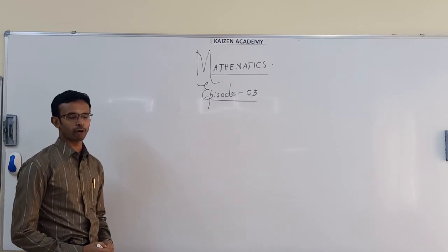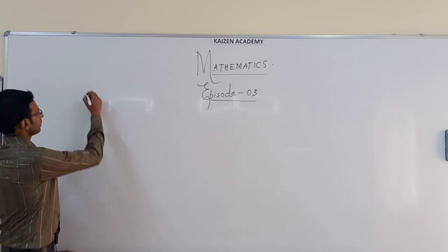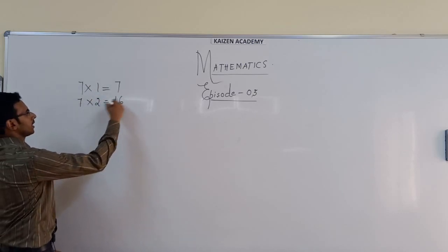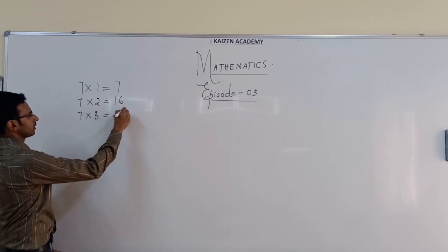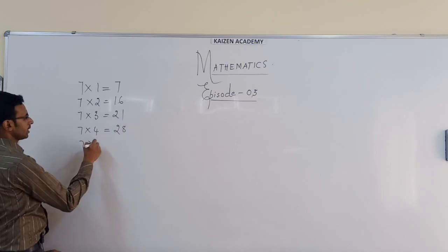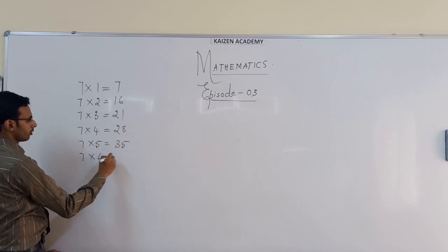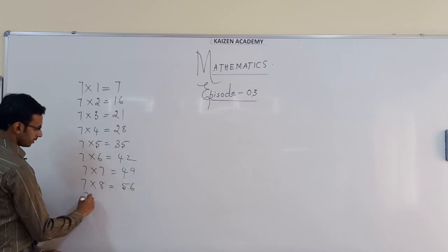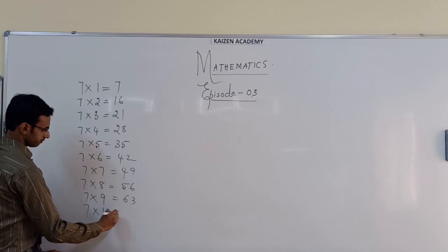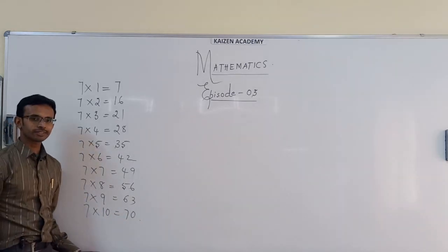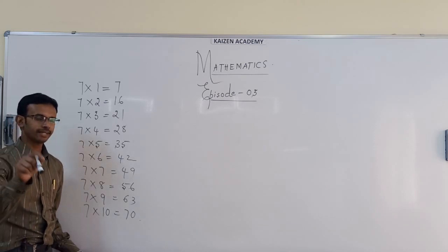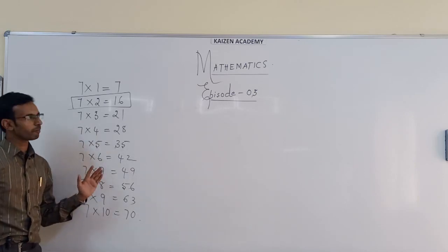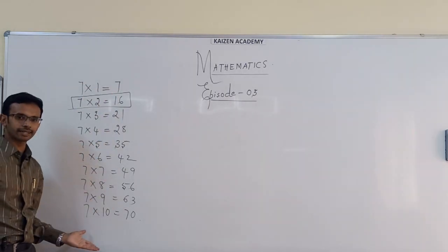Today, before I start this episode, let me first give one small but very important point that highlights a life reality. I am writing a table: seven ones are seven, seven twos are sixteen, seven threes are twenty-one, seven fours are twenty-eight, seven fives are thirty-five, seven sixes are forty-two, seven sevens are forty-nine, seven eights are fifty-six, seven nines are sixty-three, and seven tens are seventy. After seeing this table, your brain immediately flashes that 'seven twos are sixteen' is wrong — but notice: I wrote all nine things correctly and only one thing wrong, and you highlighted that one mistake.